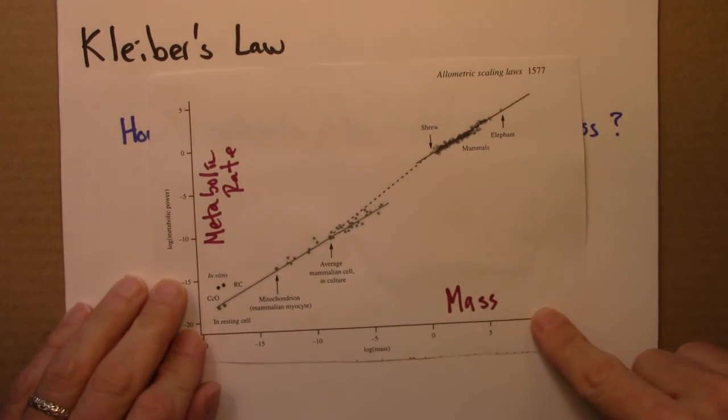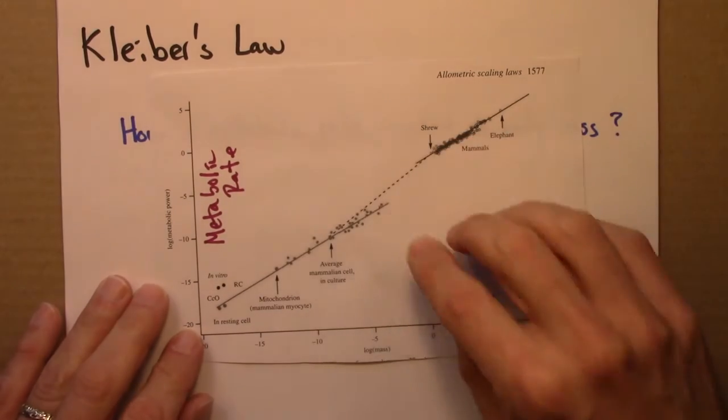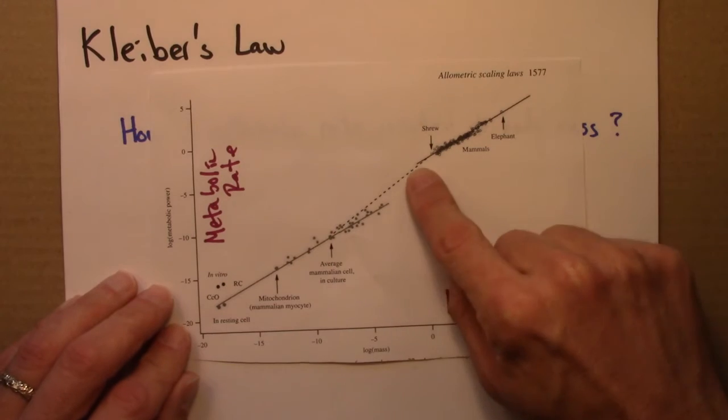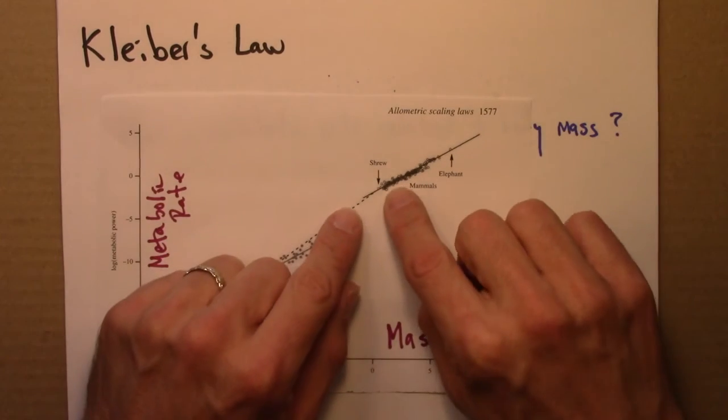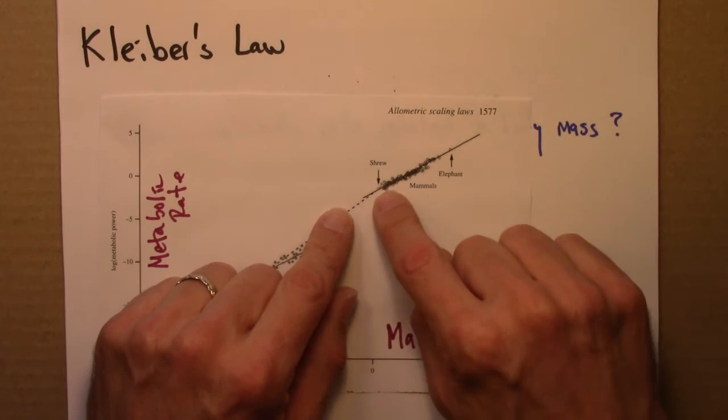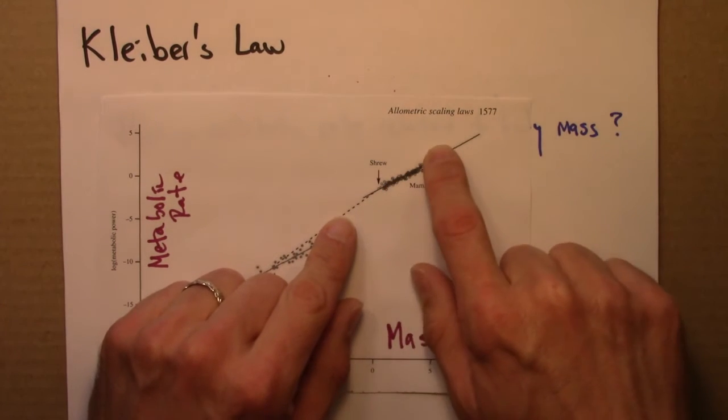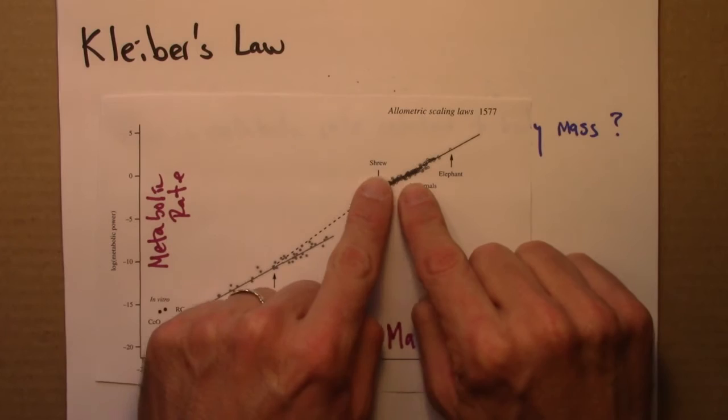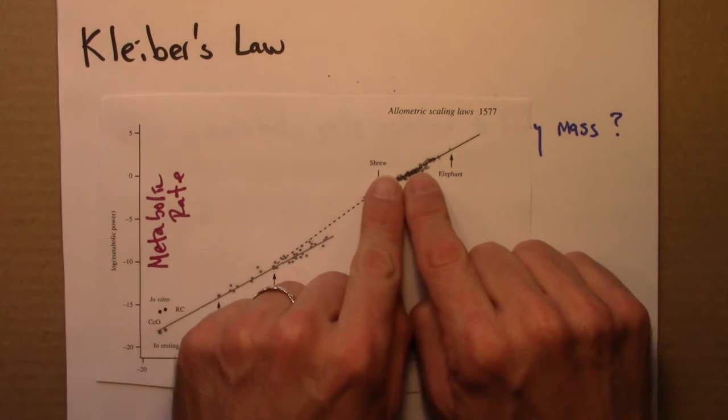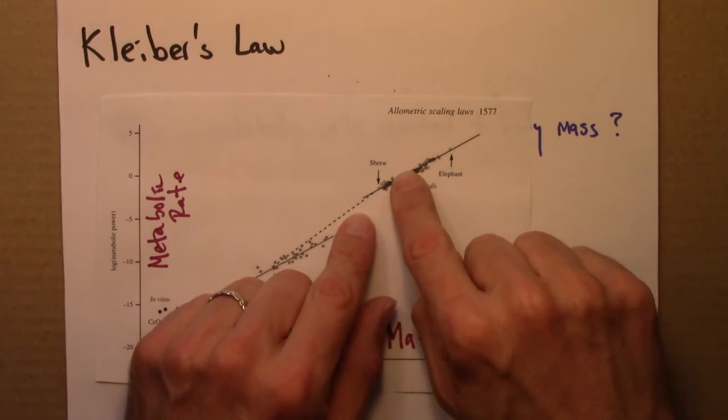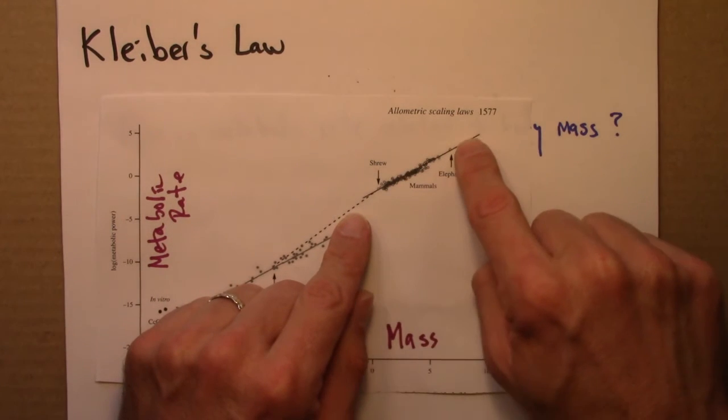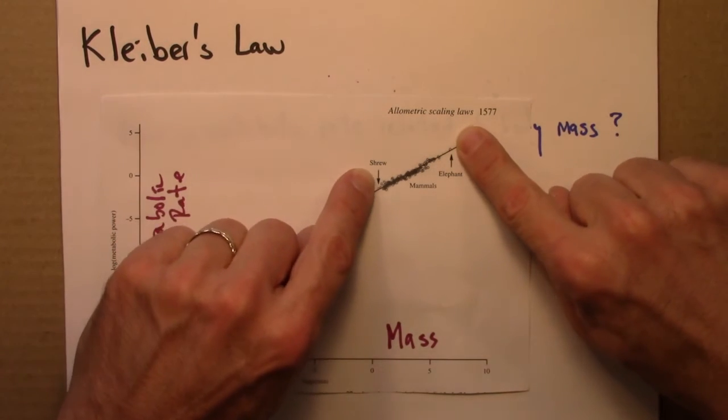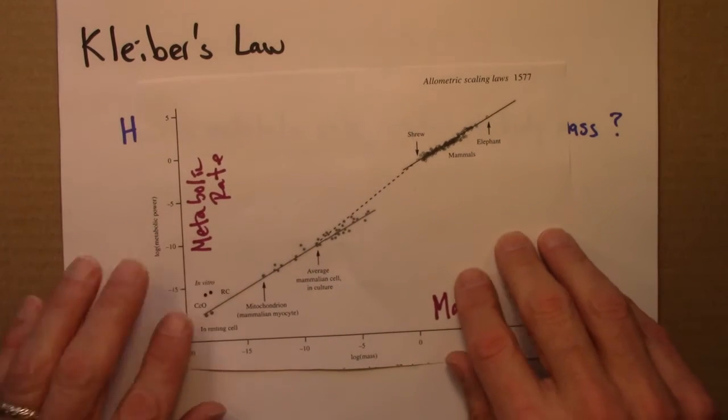So we have mass on a log scale and metabolic rate on a log scale. It's a little hard to see, but there are lots of data points, a bunch here, and many, many, many in here. Let's focus on this portion of the graph first. These dots, I know they just look like a cloud. These are lots and lots of mammals. Take a mammal, weigh the mammal to get its mass, watch how much it eats, or do something maybe a little more sophisticated than that, and you can get the metabolic rate. And so there's this pretty strong linear relationship. This data point here is an elephant, and this here is a shrew, one of the smallest mammals.